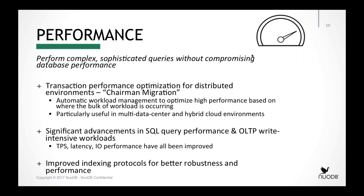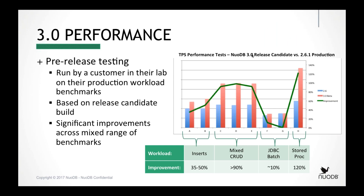On the performance side, one important enhancement is automated workload management across distributed environments — something we call chairman migration as workloads move from one data center to another. We've also made significant improvements in SQL query performance and write-intensive workloads. One customer performed benchmarking on a release candidate build and found improvements ranging from 10–20% up to 100% or more in transactions per second, especially in write-intensive and mixed workloads — achieving over 90% performance improvement across the board compared to version 2.6.